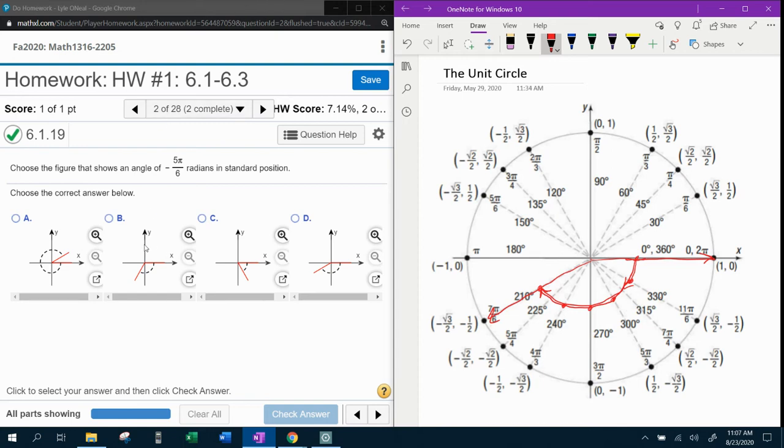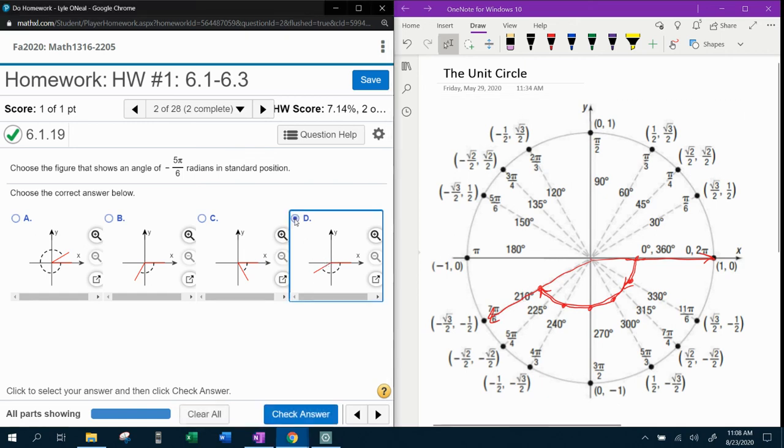And so now we need to see if there's an answer choice that looks like what we sketched. And that looks like actually B and D are pretty close. Do you see that? But D is a little bit farther around, and so is our angle we sketched. So I'm going to go with D.